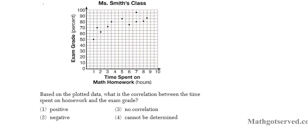Time spent on homework increasing from left to right and then exam grades going up from bottom to top. It says based on the plotted data, what is the correlation between the time spent on homework and exam grade? We have positive, negative, no correlation, cannot be determined. Cannot be determined doesn't make any sense, so let's cross that out. It has to be one of these three.